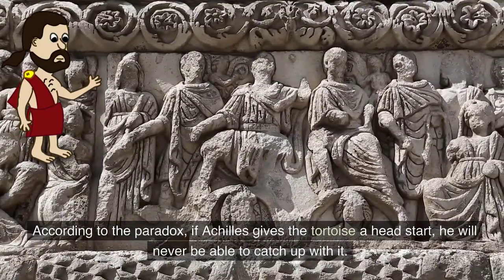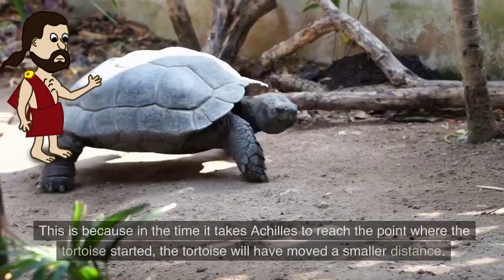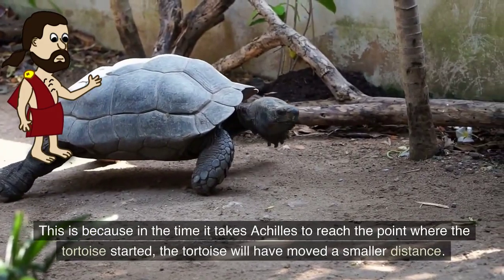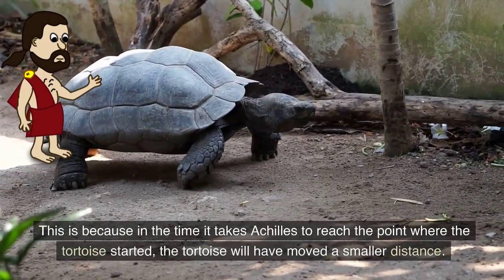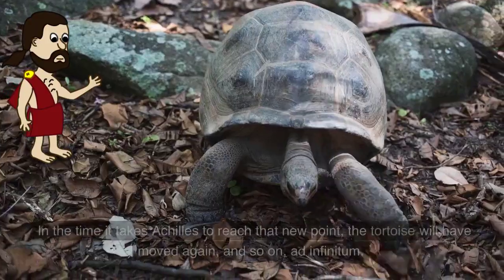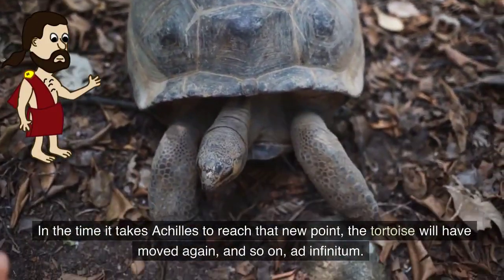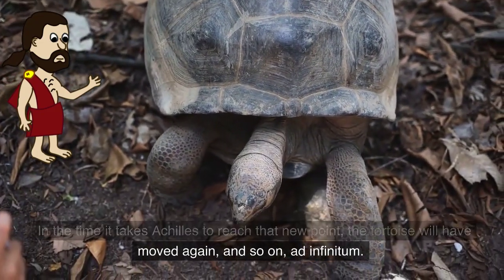According to the paradox, if Achilles gives the tortoise a head start, he will never be able to catch up with it. This is because in the time it takes Achilles to reach the point where the tortoise started, the tortoise will have moved a smaller distance. In the time it takes Achilles to reach that new point, the tortoise will have moved again, and so on, ad infinitum.